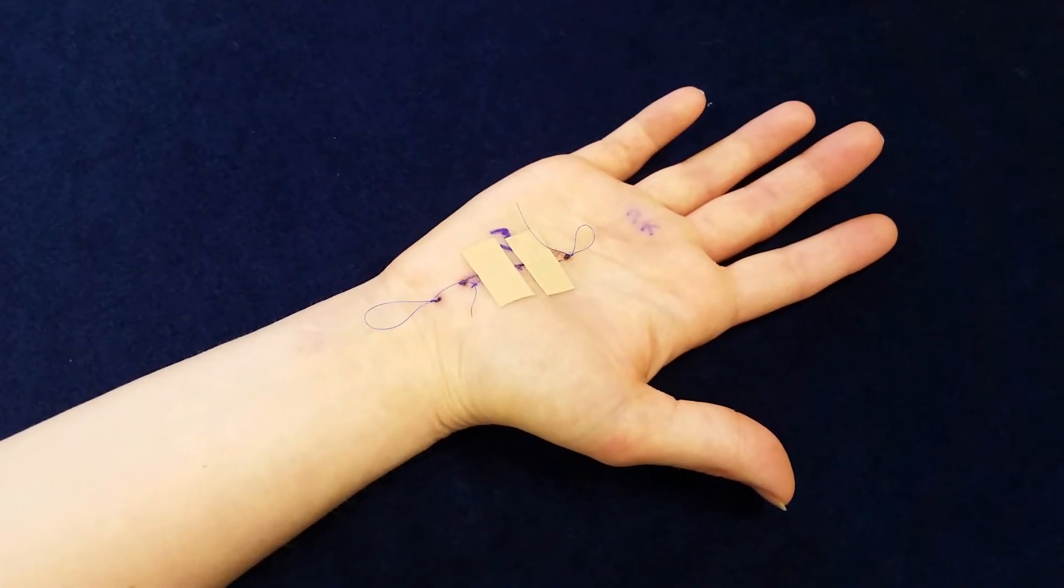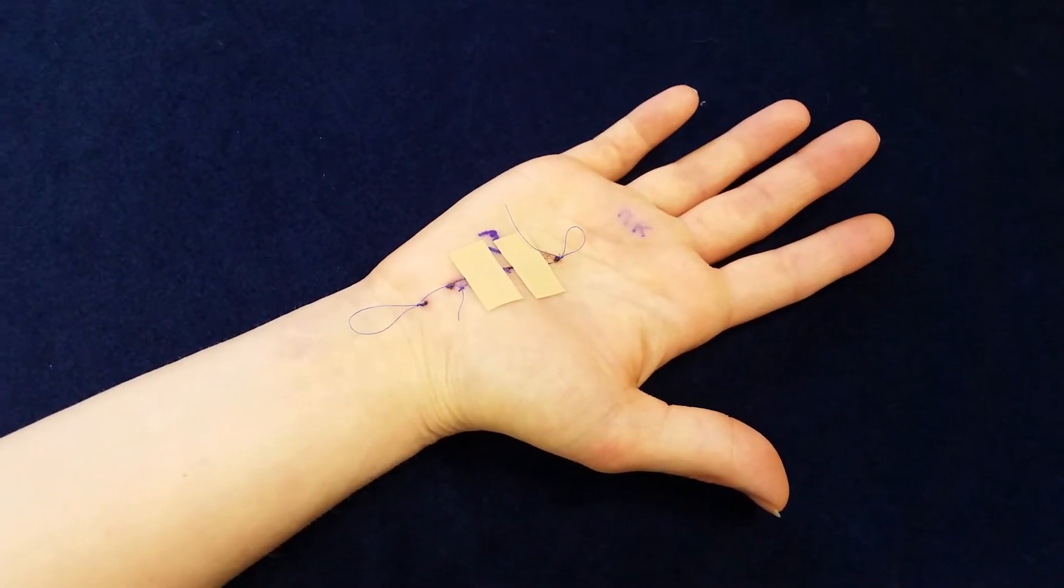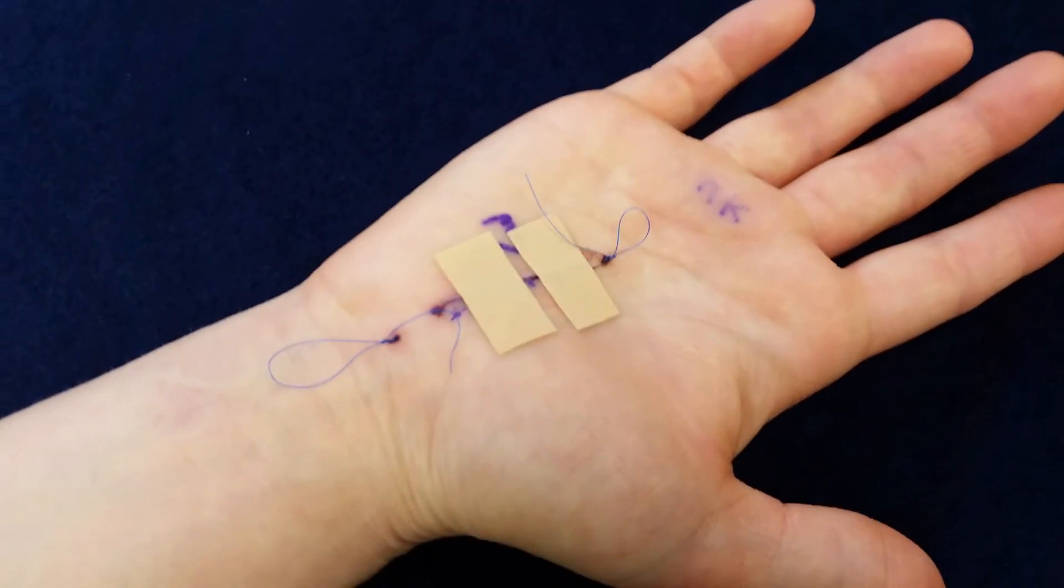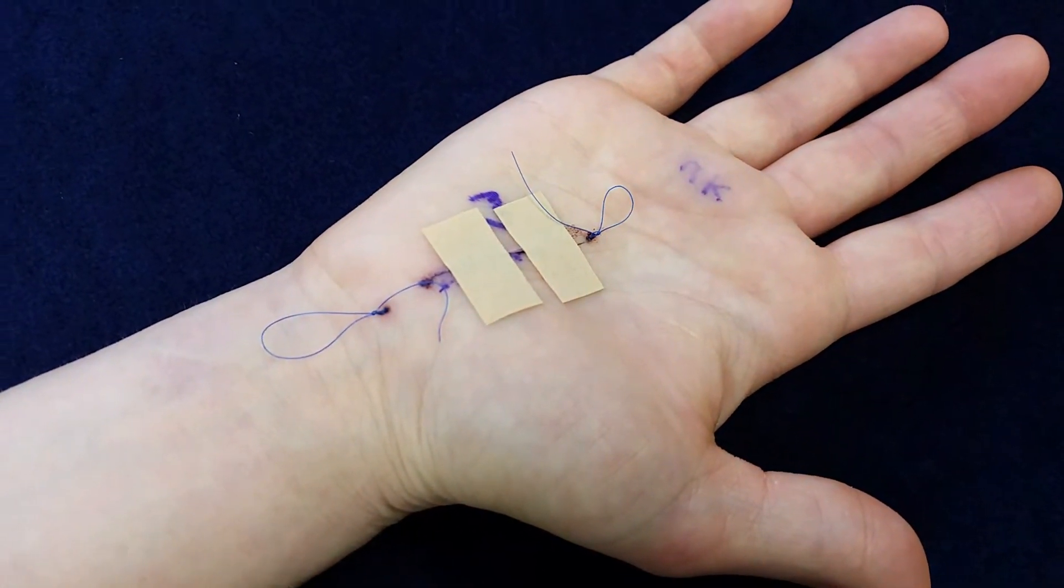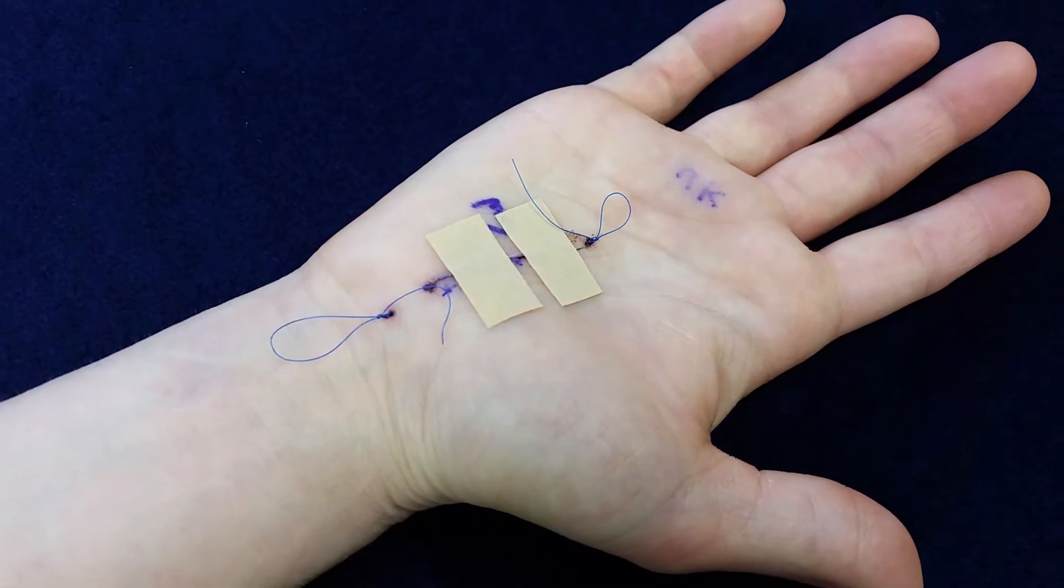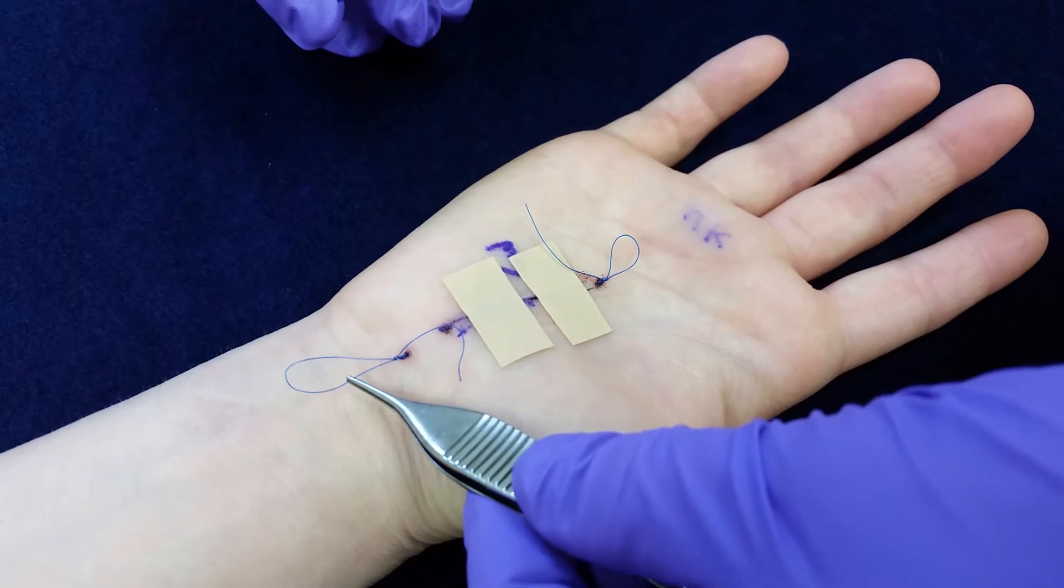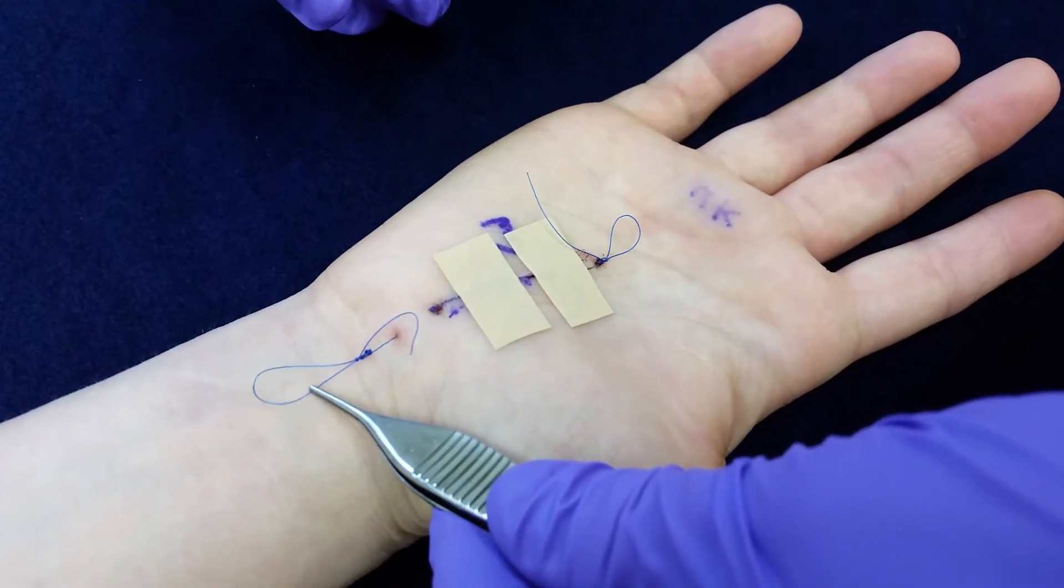So here we're going to demonstrate how to take out a running subcuticular stitch from a carpal tunnel incision. What you'll see is that there is a loop on either end, and what we're going to do here is we're going to take our pickups and pull the loop a little bit away from the incision line.